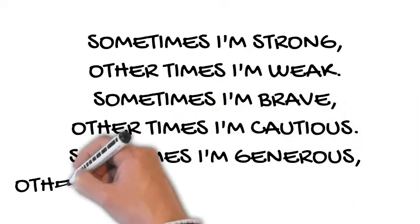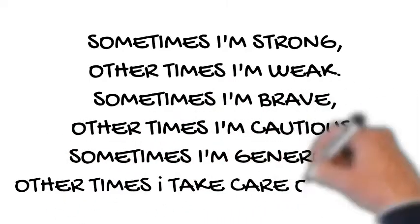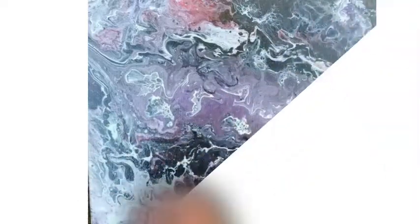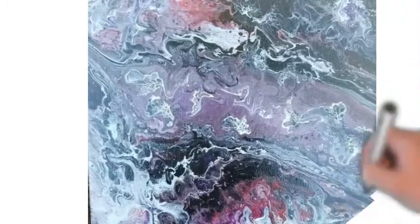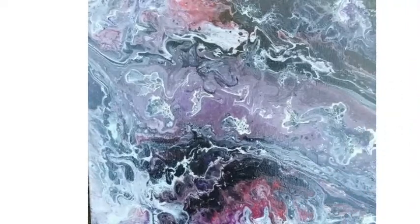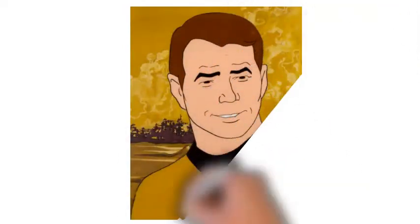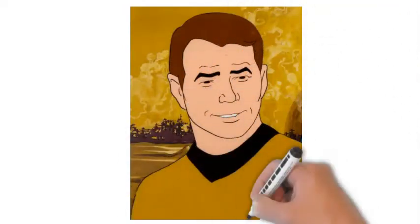So there was a great Star Trek episode where Captain Kirk beams himself down to a planet and when he comes back he's gone through an ion storm and he's been divided into two Kirks.